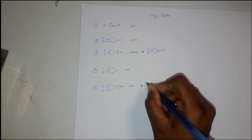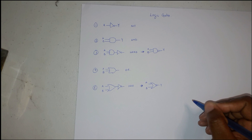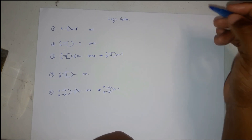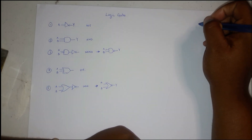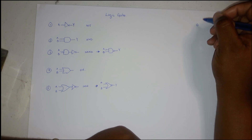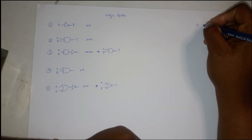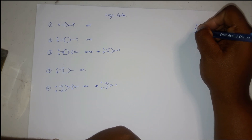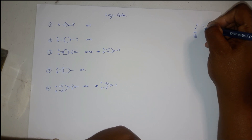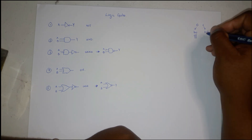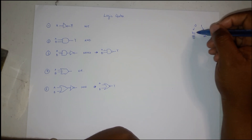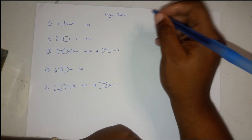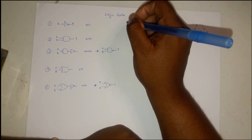Each of these gates has something called a truth table. A truth table signifies whether something is on or off — these are all binary gates, they use binary information. So 0 represents low or off, and 1 represents high or on. Each of these gates has its own truth table.